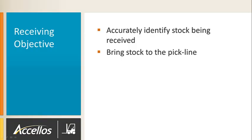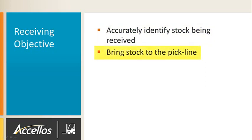The objectives of the receiving process are twofold. First and foremost, accurately identify stock being received so the business has visibility into available inventory. Secondarily, and just as important, bring stock to the pick line as efficiently as possible to service customer orders. This may seem simple at first; however, different scenarios conspire to reduce accuracy levels and make receiving less efficient.